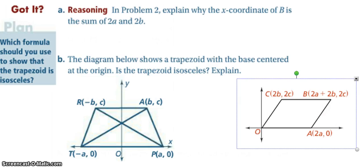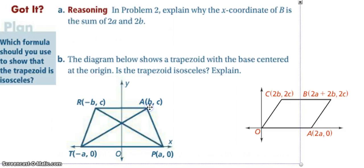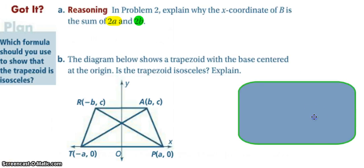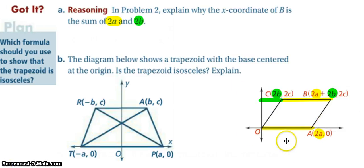All right, go ahead and work through problem two until you get to the got it, then try the got it, come back to check your answer. This image right here is the shape from problem two. All right, so in part A we have this parallelogram that we know the B coordinates are 2A plus 2B.